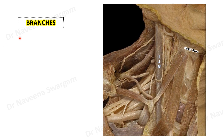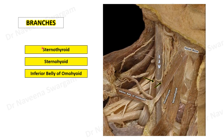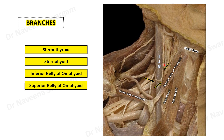Now let's see the branches coming from ansa cervicalis. It gives muscular branches to the infrahyoid muscles. They are: a branch to the sternothyroid muscle, a branch to the sternohyoid muscle, and a branch to the inferior belly of the omohyoid muscle. So there are three muscles which are supplied by ansa cervicalis. Apart from these, the superior belly of the omohyoid muscle is also supplied by a branch from descending hypoglossi.